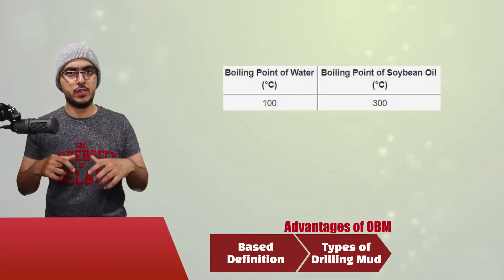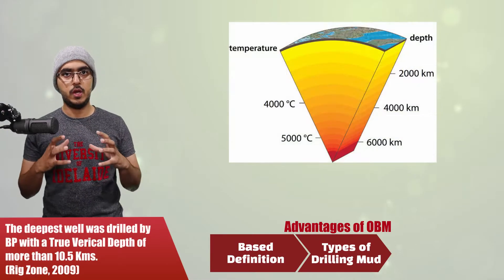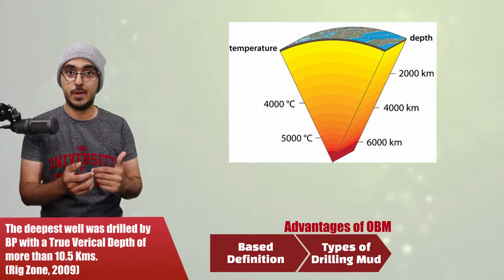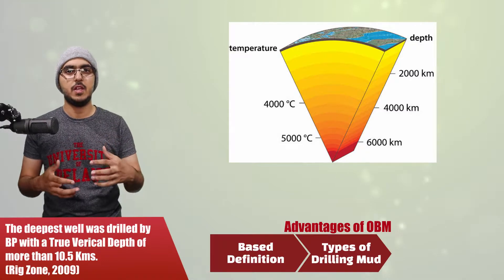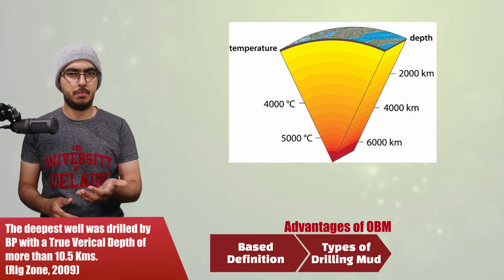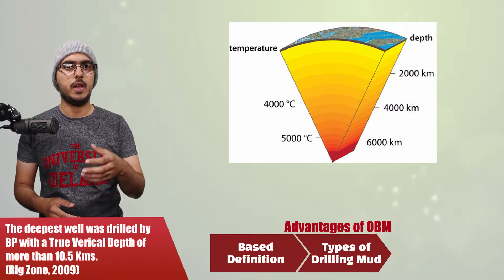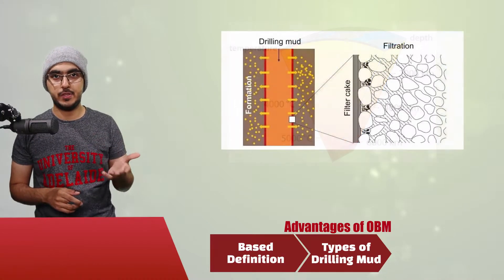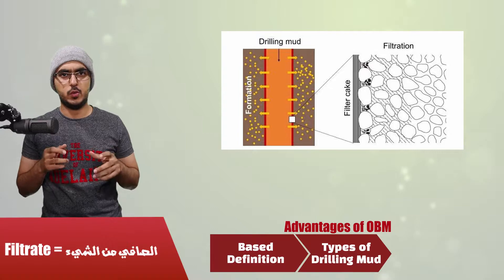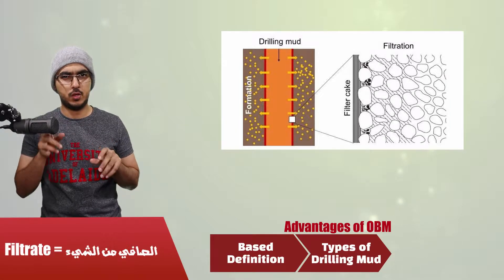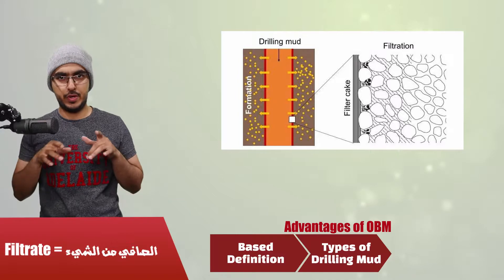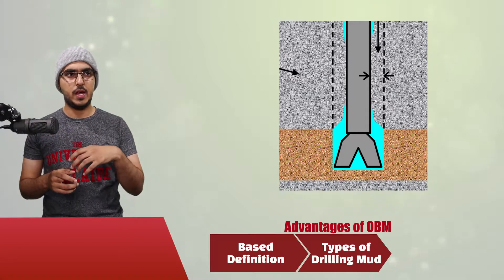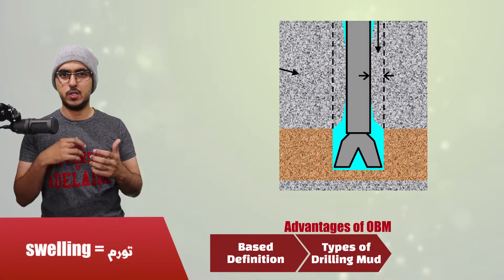As you drill deeper into the Earth's surface, you are approaching the core of the Earth, so your temperature gets higher — the higher the depth, the higher the temperature. So most of the time, a very high depth means you may need to use oil-based muds so you don't get wellbore stability problems. Another advantage is that oil-based muds have less filtrate, so less liquid mud going into the formation compared to water.